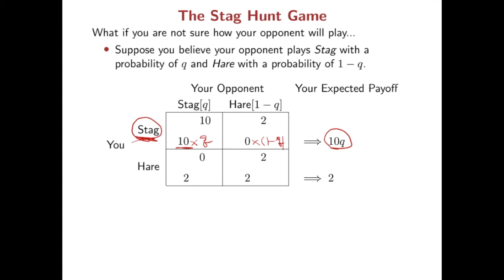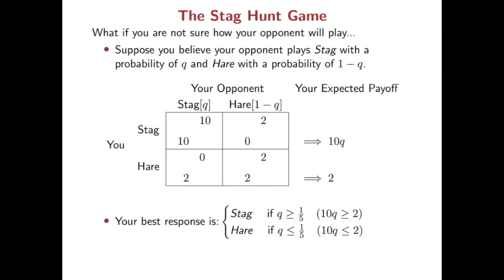On the other hand, if you choose Hare, you will expect 2 with probability q when your opponent plays Stag, and also 2 with probability 1-q — so playing Hare gives you 2. Now we compare these two expected payoffs to find your best response against this belief. If 10q is greater than 2, then your best response is Stag. And if 10q is less than 2, then Hare is the best response.